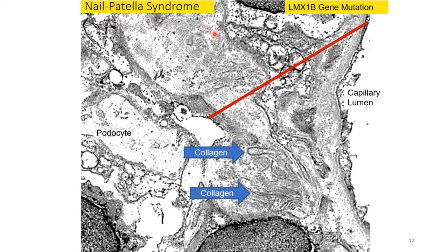A rather rare condition is nail patella syndrome, which manifests as various nail and bony abnormalities; renal problems may arise very late in life. The kidney biopsy on electron microscopy shows a grossly thickened GBM with areas of clearing — so-called lacunae — and deposition of collagen fibers. If the patient does not have extra-renal manifestations, then electron microscopy of the kidney may provide the initial diagnostic features, triggering genetic investigation and so on. Diagnosis may be made by electron microscopy of the kidney biopsy, making it essential for diagnosis.